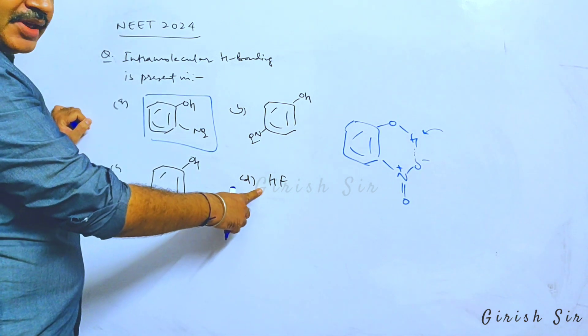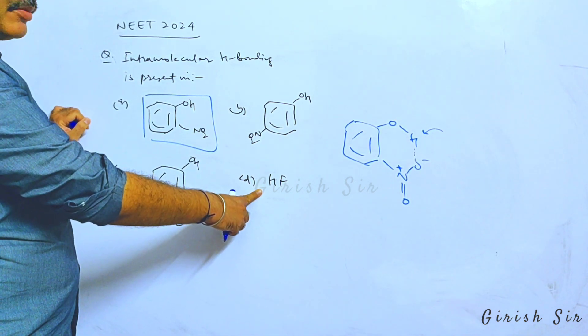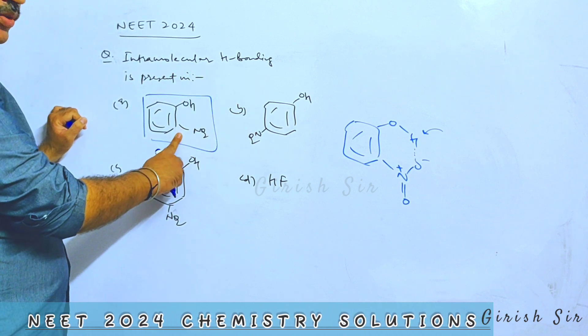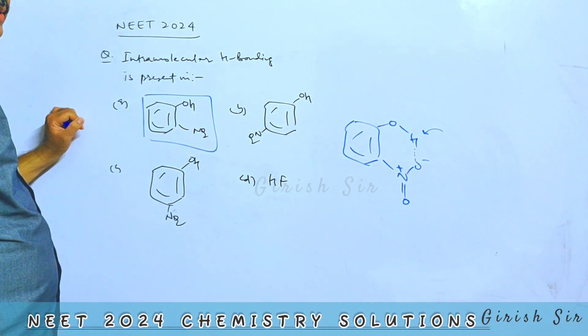In option D, HF as well, intermolecular H bonding is possible. So only one compound out of the given option, that is orthonitrophenol, is able to show intramolecular H bonding.